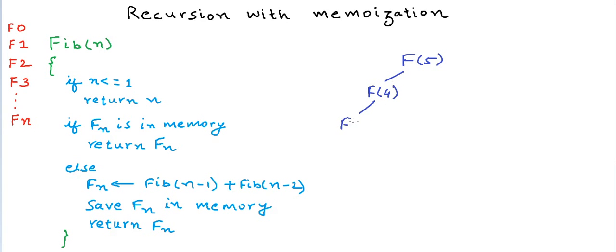Now F(4) again makes a call to calculate F(3), F(3) makes a call to calculate F(2), and F(2) makes a call to calculate F(1). F(1) does not make a recursive call any further. So now at this stage, this F(2) has finished calculating once. So now we save it in the memory.